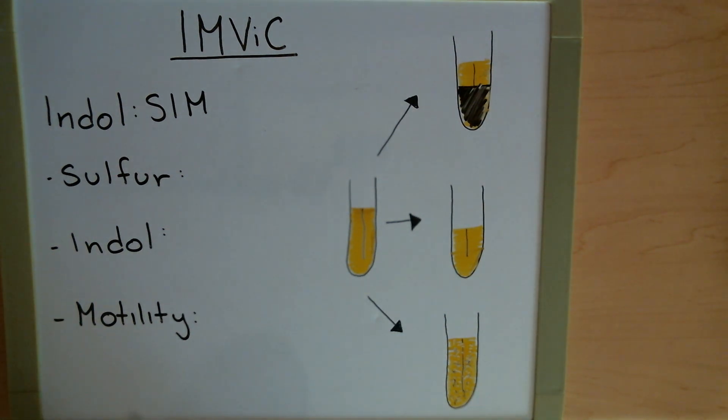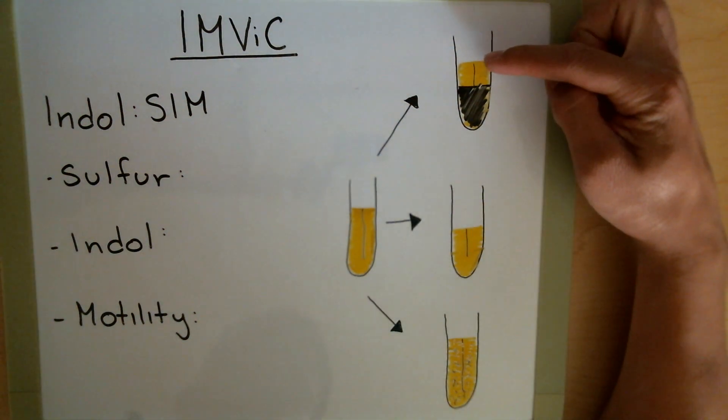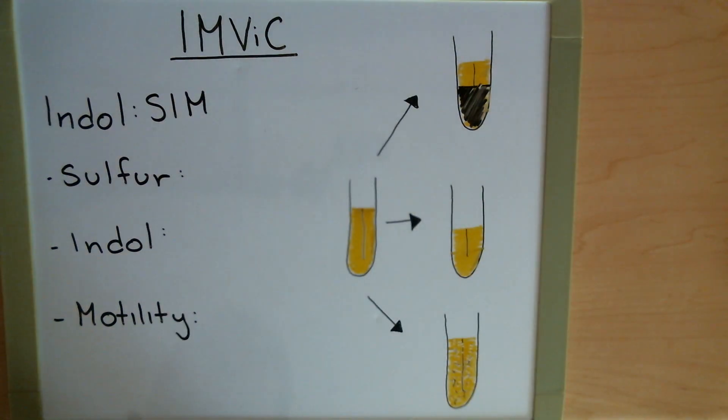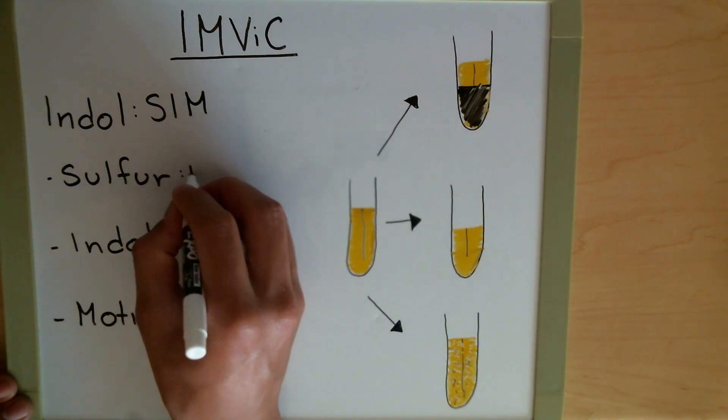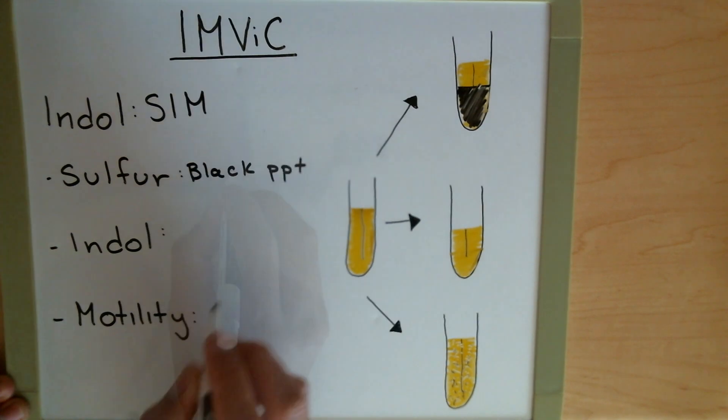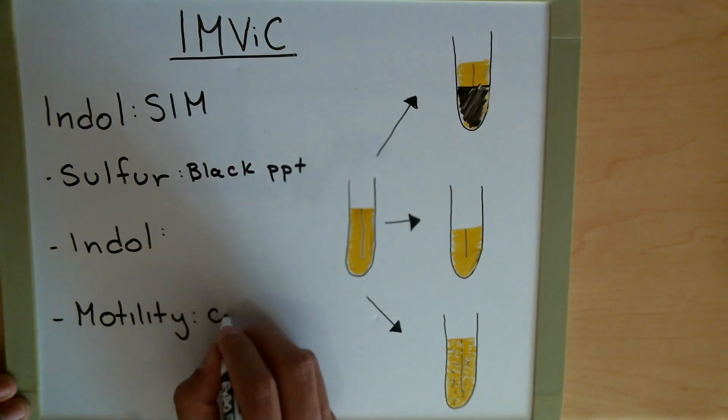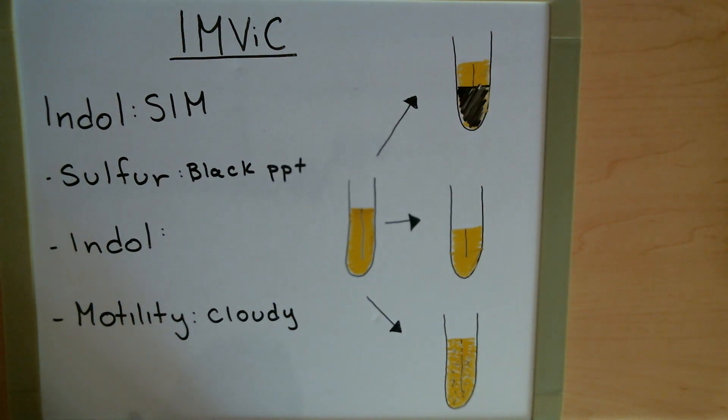In this experiment, the SIM test uses a solid medium inside of a test tube, and we'll be using a stick as opposed to the loop. With the stick, we'll flame it, grab our bacteria, and simply just stab the media. Try to go in a simple straight line and don't go in a jagged motion. Afterwards, we'll incubate the tubes, and some things we can see right away. When we look for sulfur, we're looking for the presence of a black precipitate, while motility we're looking for something that's cloudy.